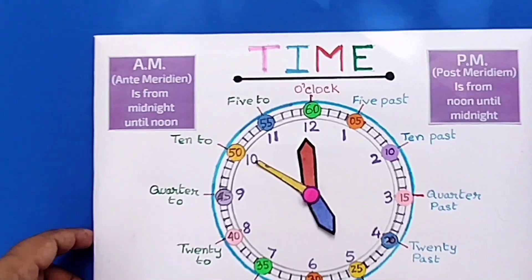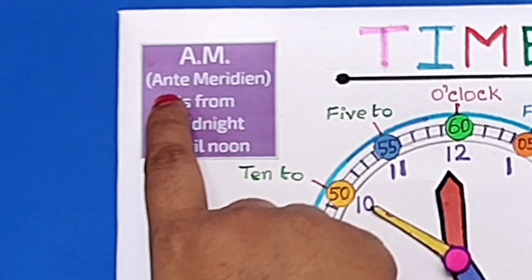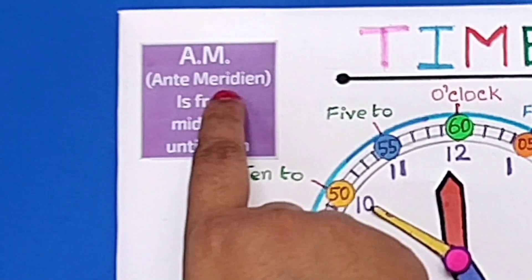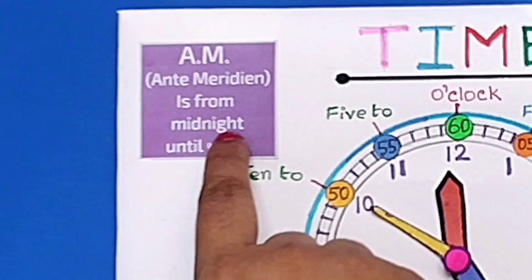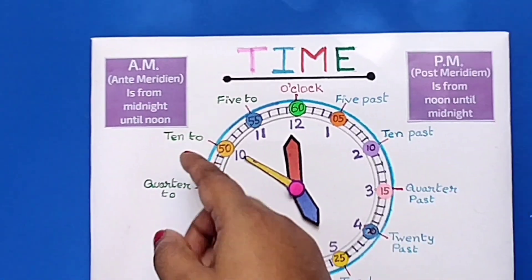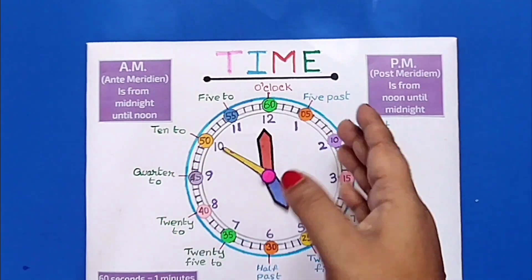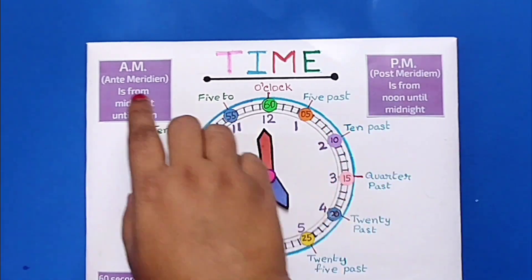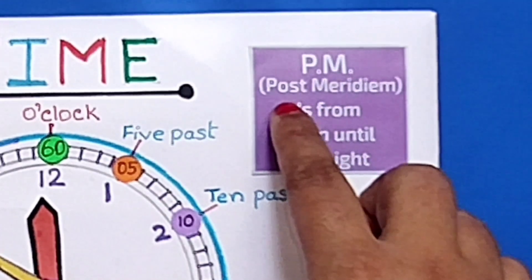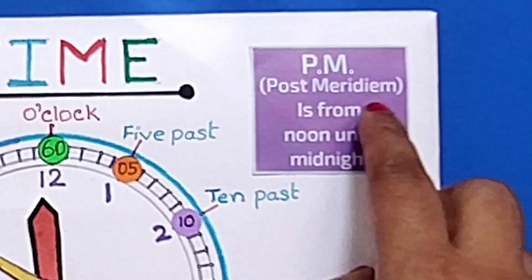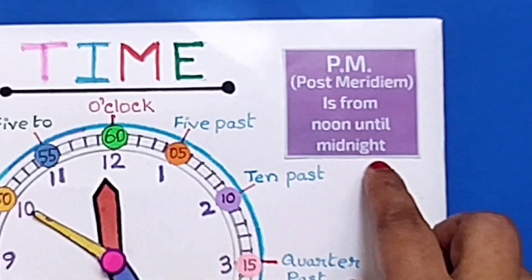AM — the full form of AM is antimeridium. It is from midnight until noon, that means 12 o'clock at night to 12 o'clock at noon. PM — the full form is postmeridium. It is from noon until midnight.